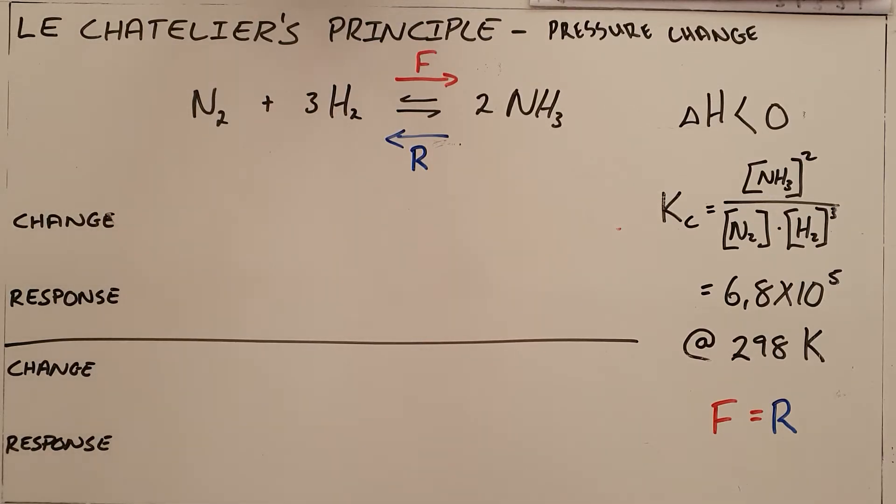We know that once equilibrium has been established, the rate of the forward reaction is equal to the rate of the reverse reaction, and the ratio of concentration of products to concentration of reactants remains constant as long as the temperature remains constant.